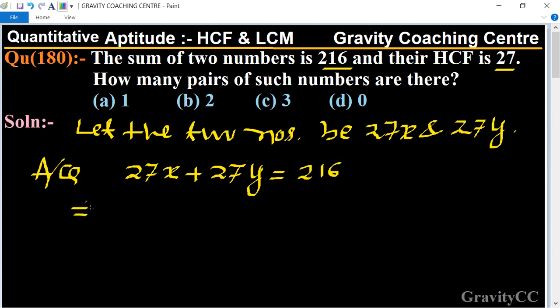Now we take 27 as common, so x plus y equals 216 divided by 27, which is 8. So x plus y equals 8.